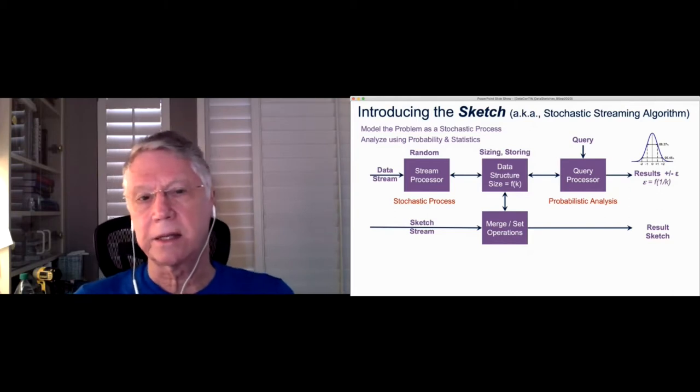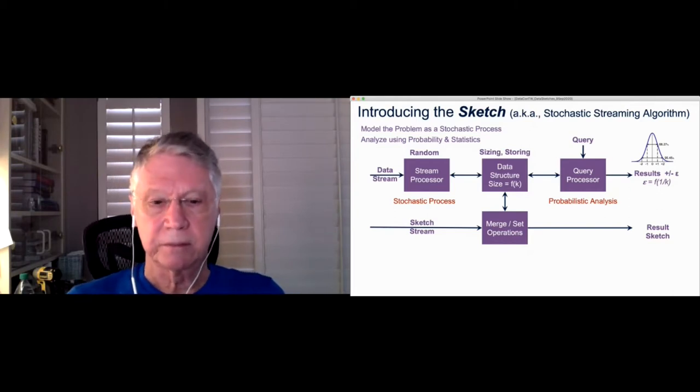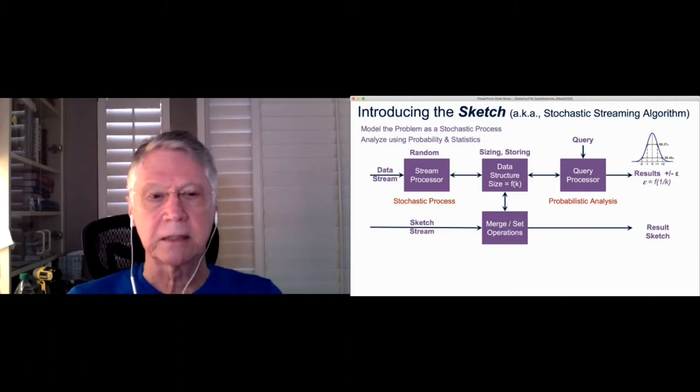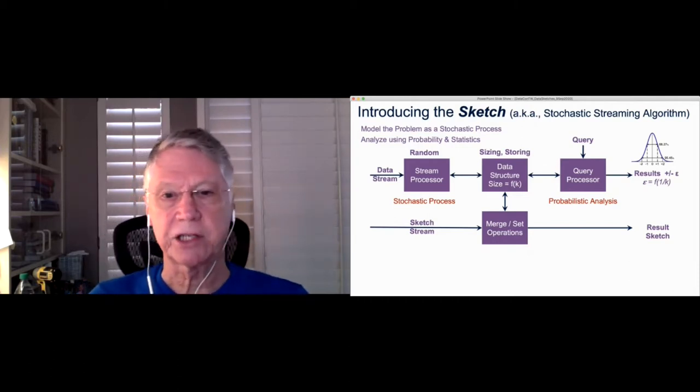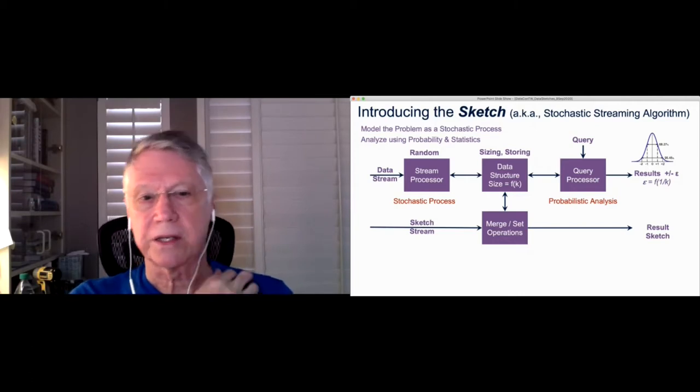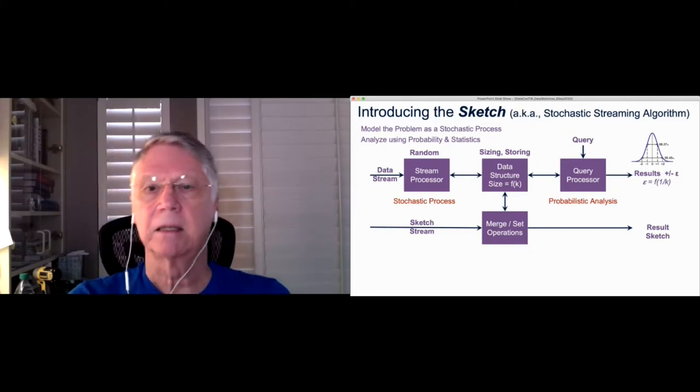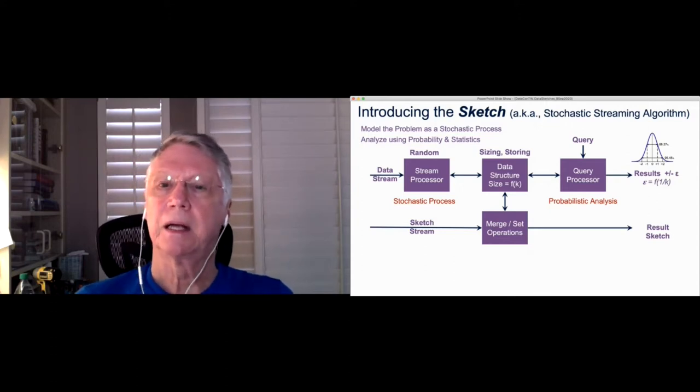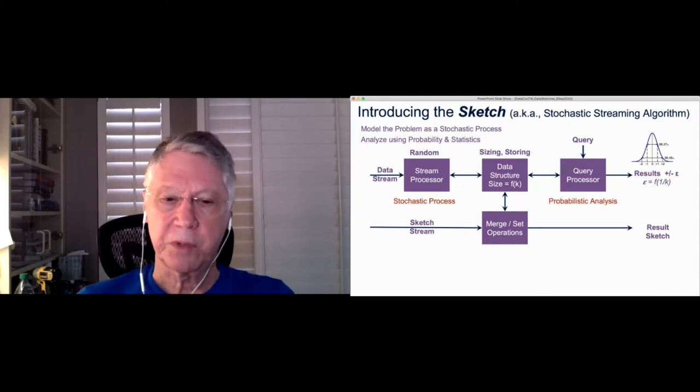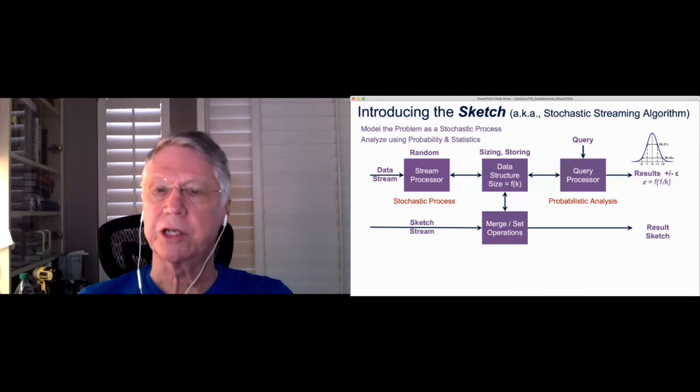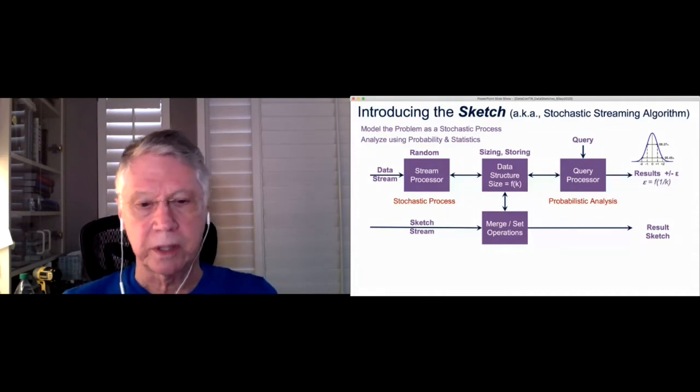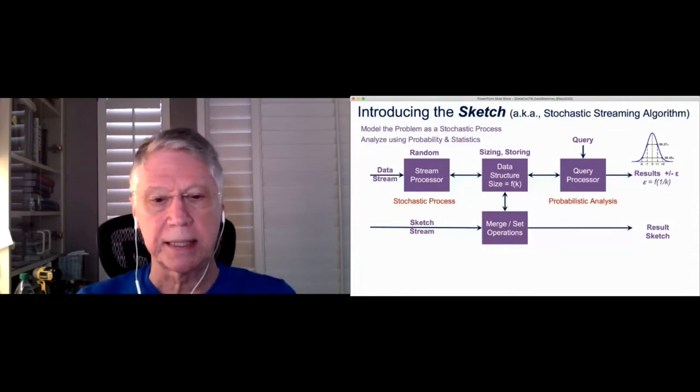And then this data structure can be queried at any time during the streaming process or later after the sketch has been built. You can query the sketch and obtain results. And the results you get, of course, have some probabilistic distribution of error about it, but it's generally pretty small. The fourth element that is very important in all these sketches is what we call mergeability.